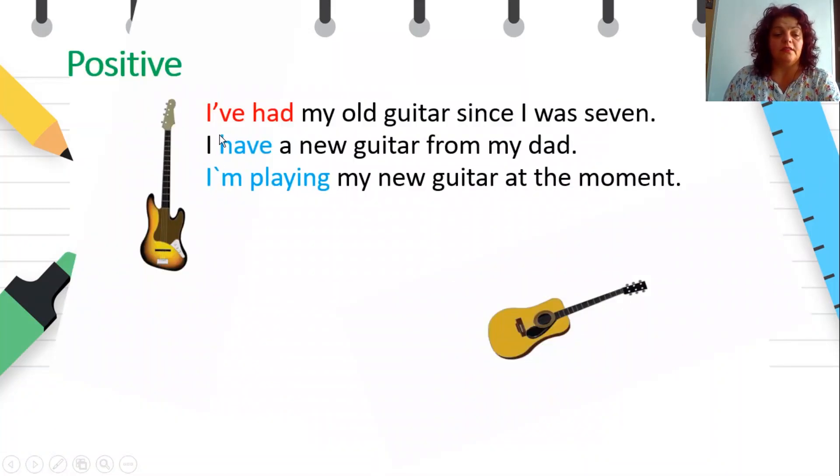Look at these three sentences. I've had my old guitar since I was seven. Look at the verb construction. I've had. You've got the verb have plus past participle form. That's present perfect, because this action started in the past, but I still have my guitar. Next sentence: I have a new guitar from my dad, which is a fact. My dad bought it, and I'm still having it. And I'm playing my new guitar at the moment, and you can hear the music playing my guitar.